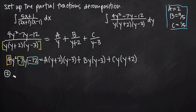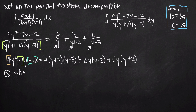For method two, just like last time, we look at each factor — y, y plus 2, and y minus 3 — and figure out what to set y equal to in order to make each factor zero. Starting with y plus 2: y must equal negative 2 because negative 2 plus 2 equals zero. When y equals negative 2, notice that the y plus 2 factor appears with both A and C, so setting y to negative 2 will eliminate both A and C, leaving only B.